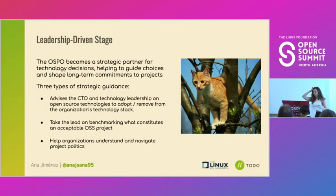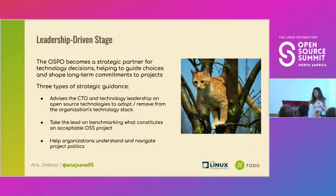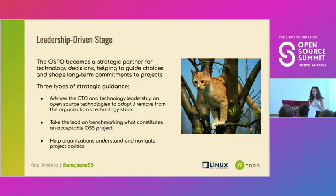Finally, if the organization is able to have all this in place, it's when we can start talking about the leadership-driven stage. OSPOs can become advisors to the organization, driving guidance — for instance, advising the CTO and technology leadership on which open source technologies are best to use, deciding what constitutes an acceptable or interesting open source project for the organization to contribute to and participate in, and helping organizations understand and navigate project politics.